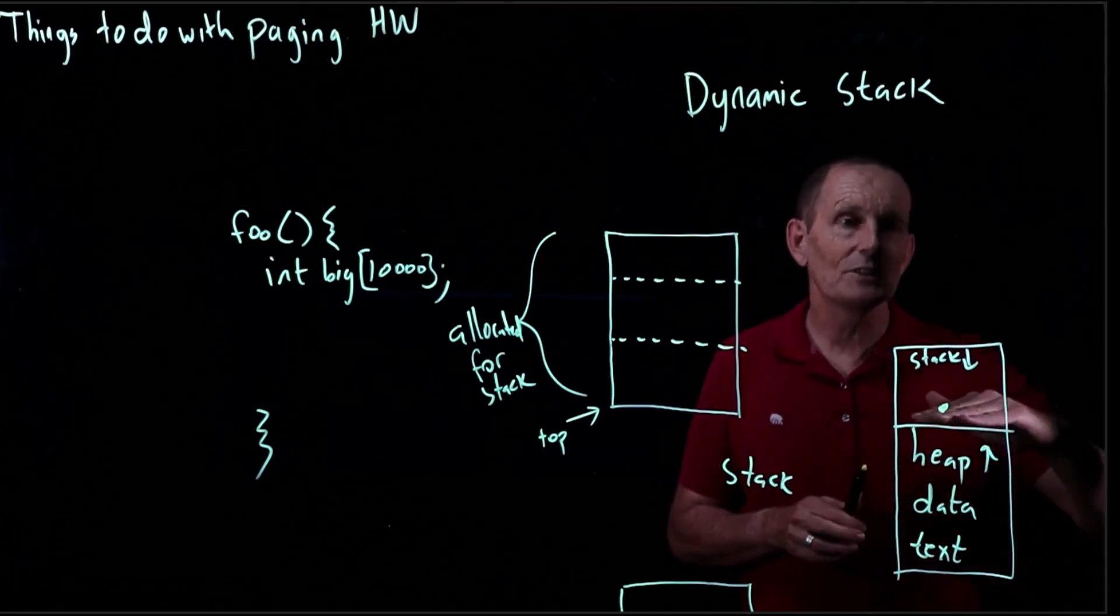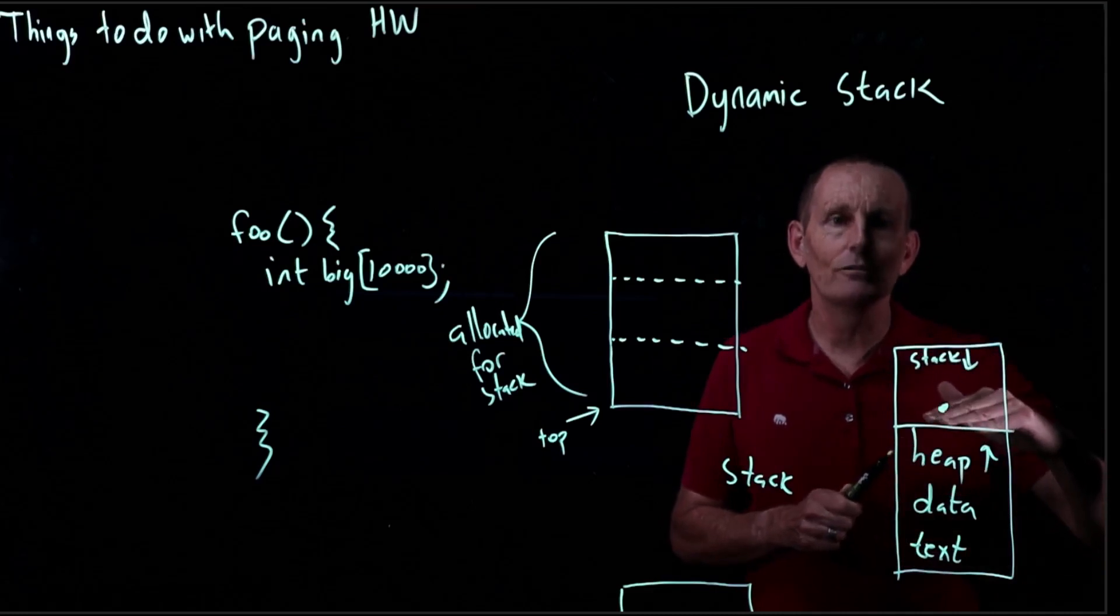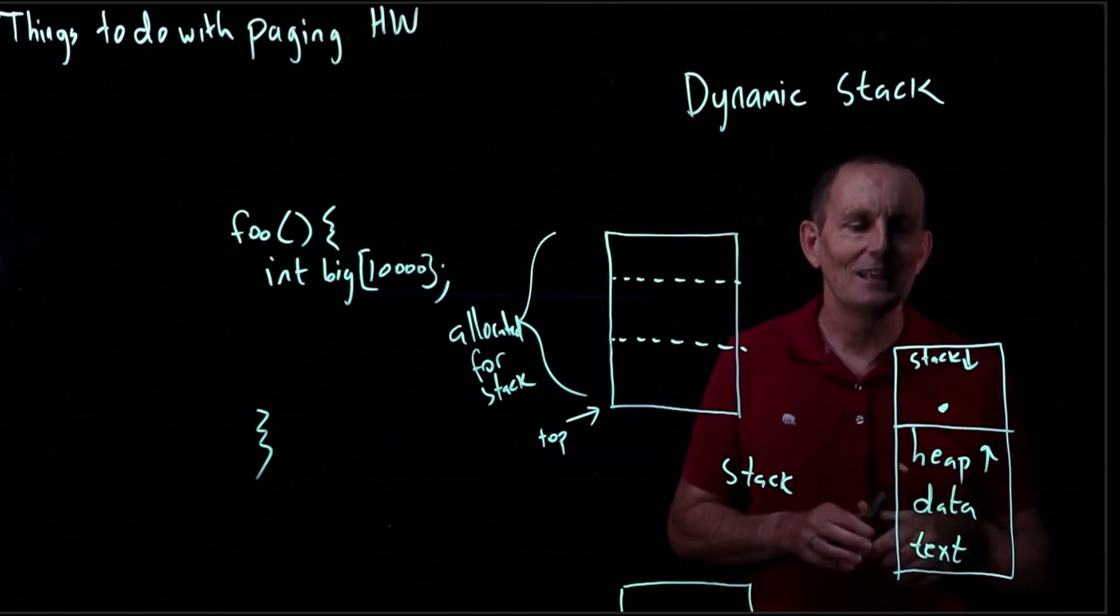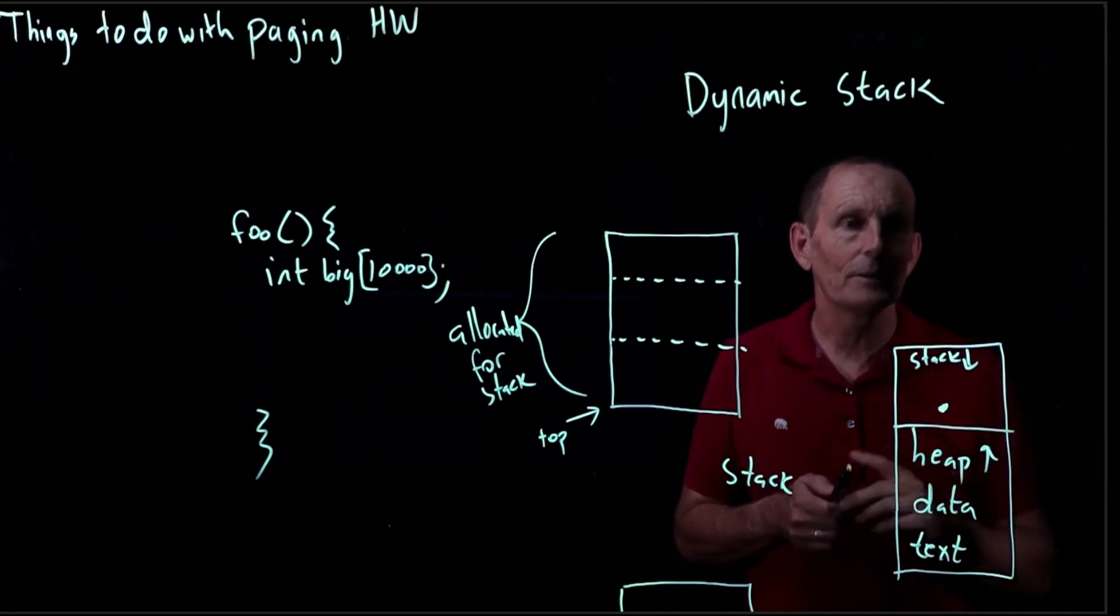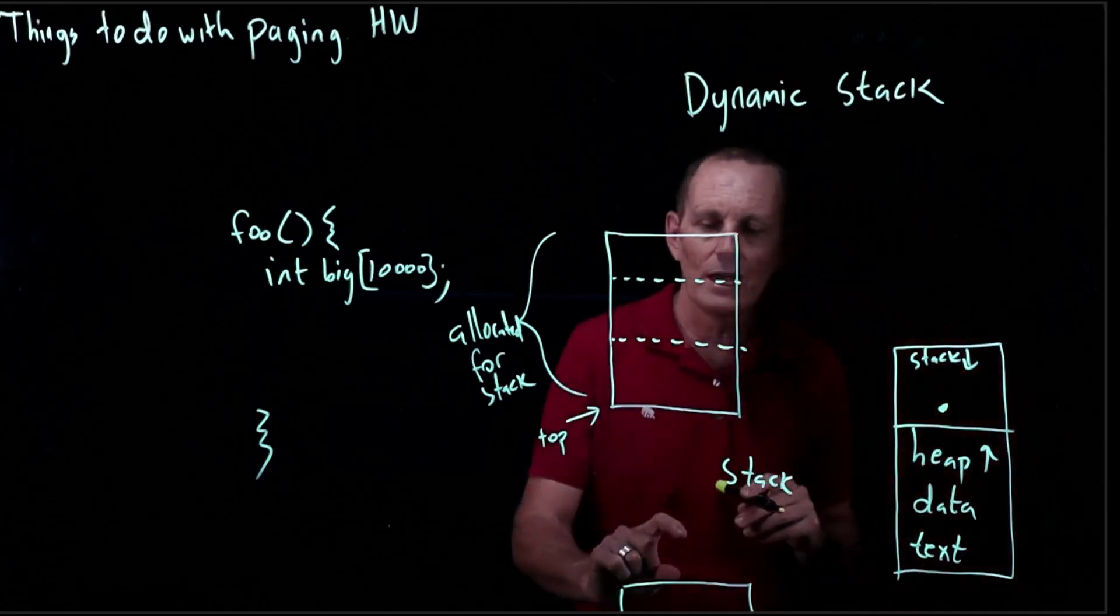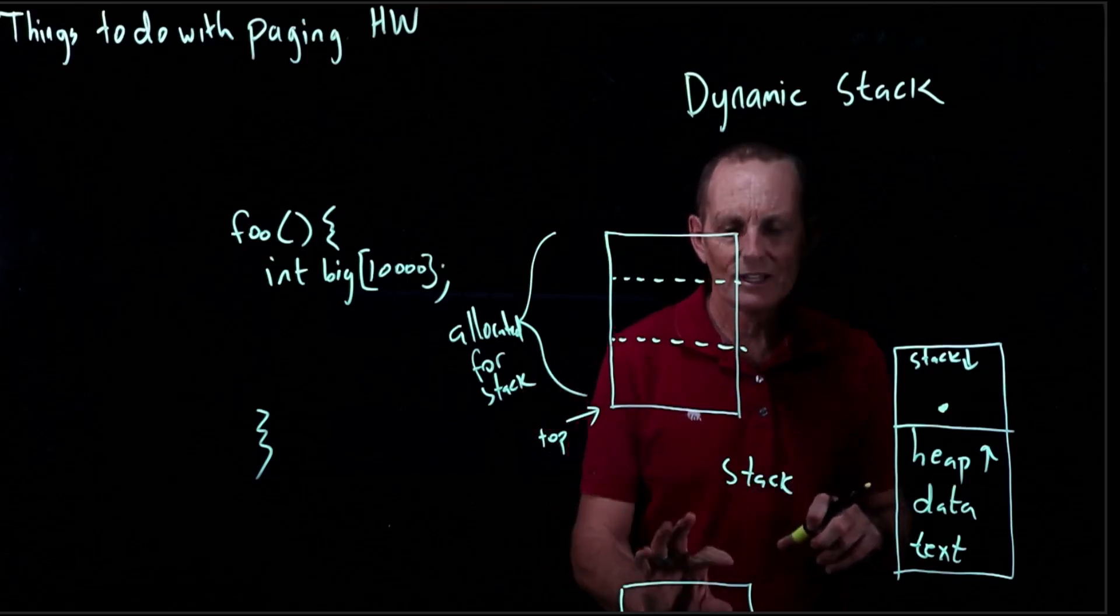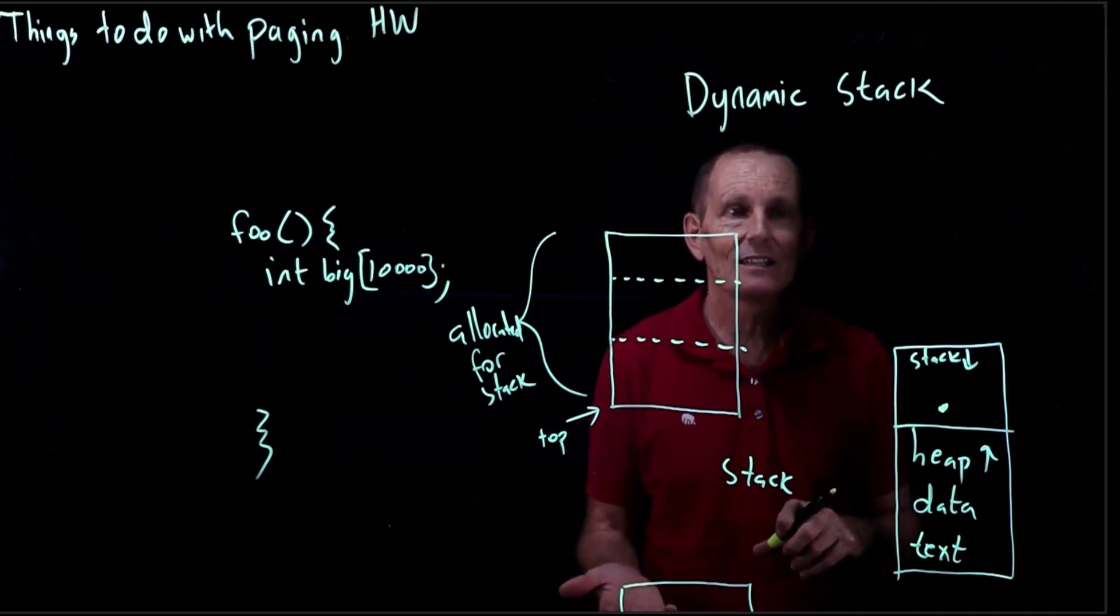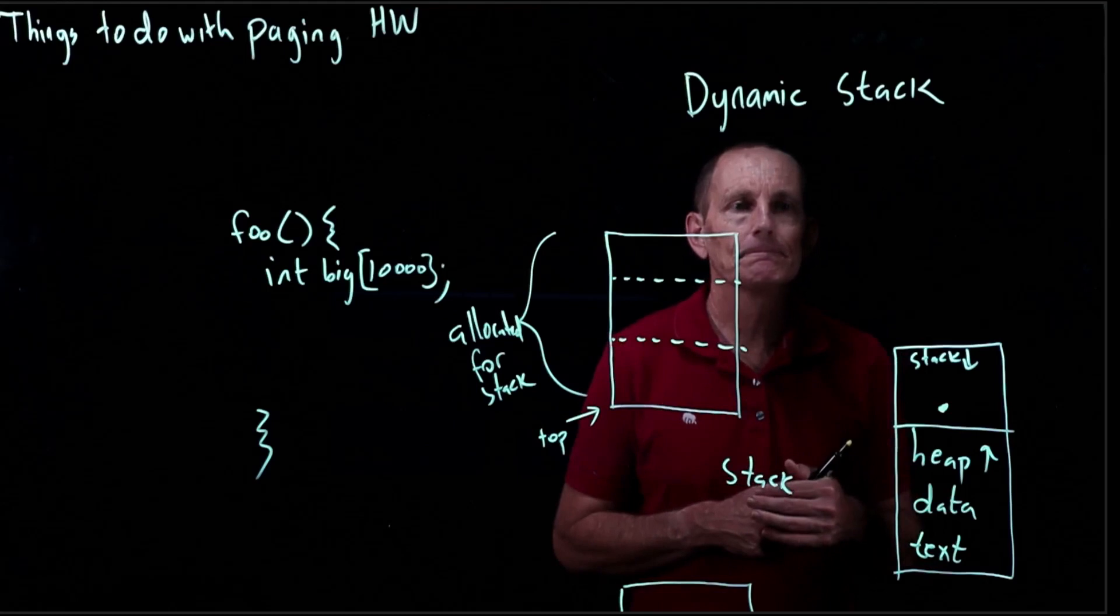It certainly would be possible to say everything from the heap up that's been s-braked so far all the way up to the top of the address space, we're going to consider part of the stack. And so if there's a read write in here, we'll just assume the stack has gotten much, much bigger. Now, do we want to go ahead and allocate all the intervening ones? No particular reason. If we're going to decide that this here is a reference to the stack and allocate this page, let's just allocate that page and let's let the other pages, again, be demand created. That's the idea of dynamic stack.